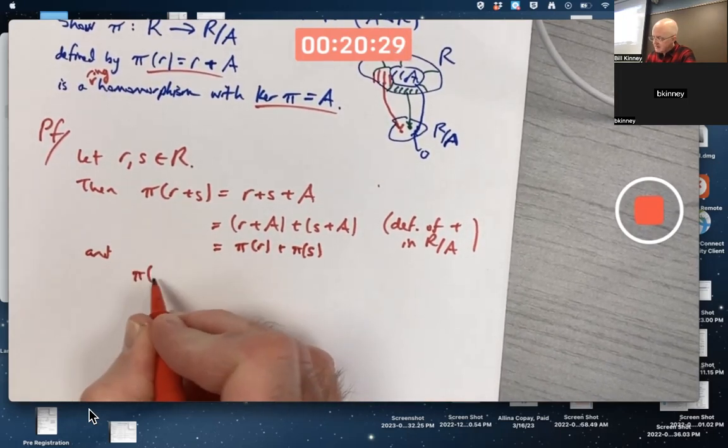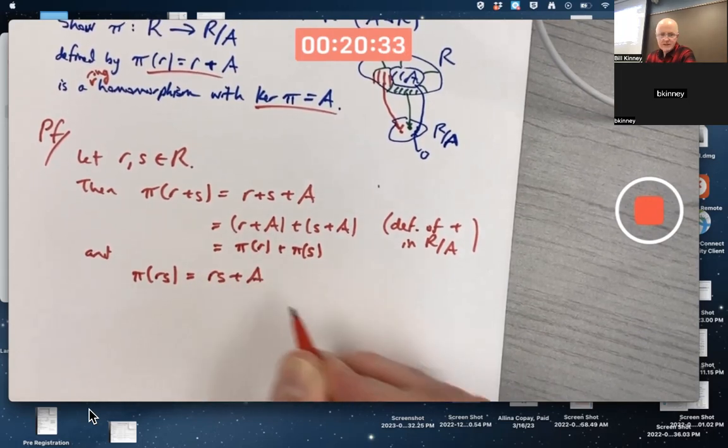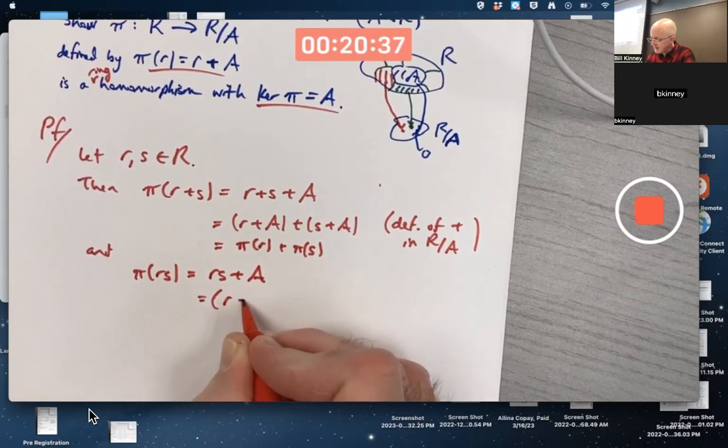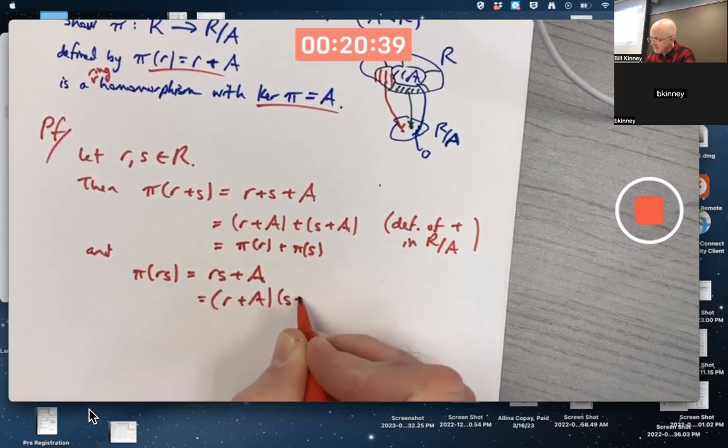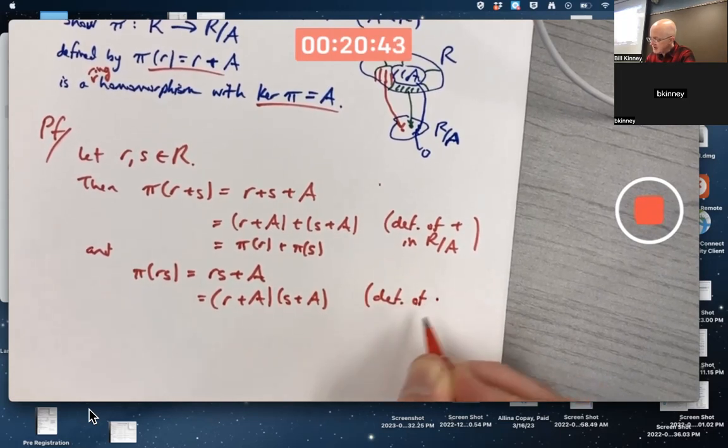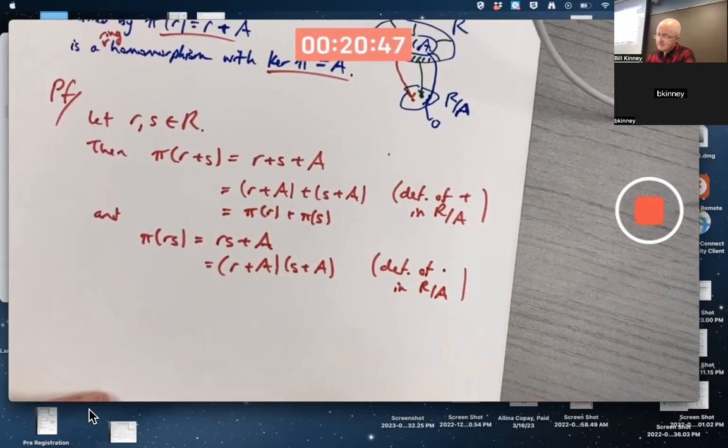And that's pi of R plus pi of S. And under multiplication, what does it mean to multiply two left cosets? You multiply the representatives. We got the answer there. Here's the original multiplication. That's the definition of multiplication in the factor ring. So that verifies that it's a homomorphism, a ring homomorphism.